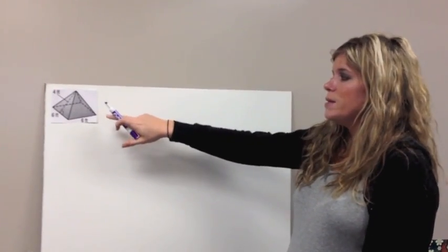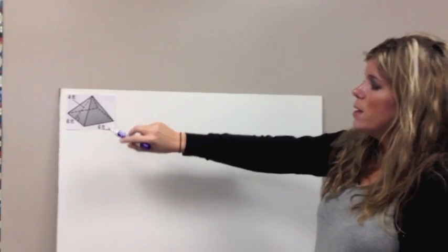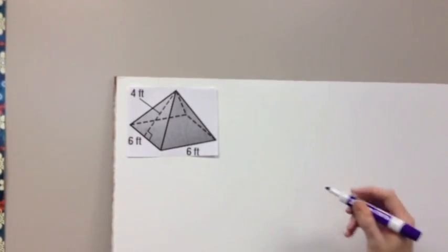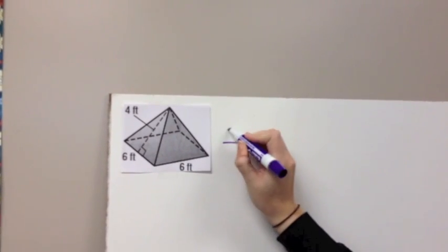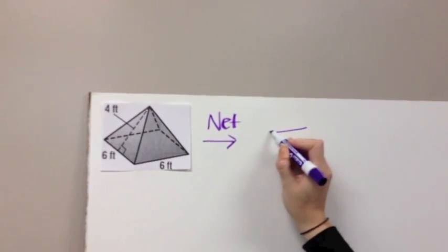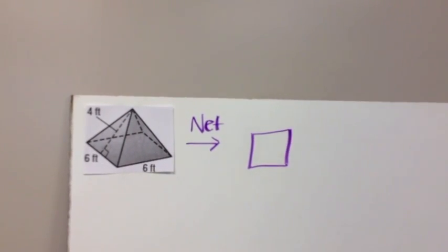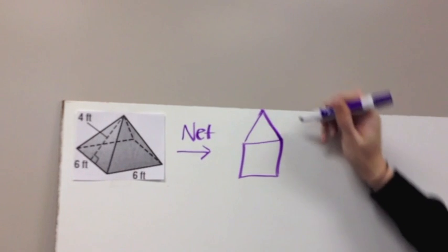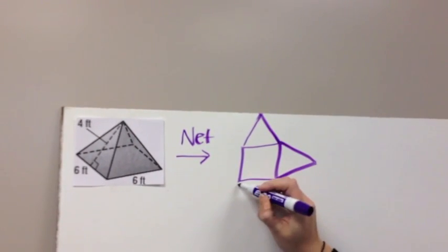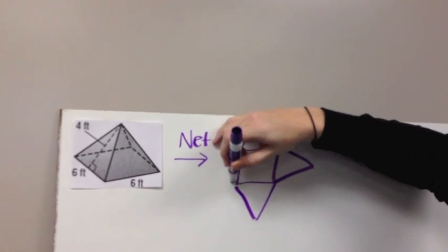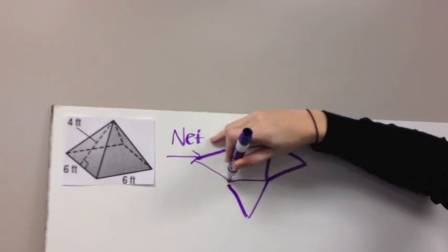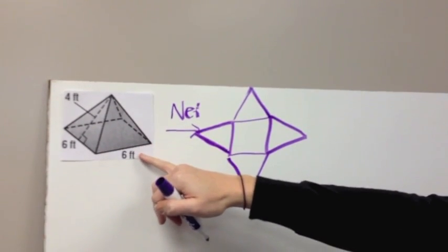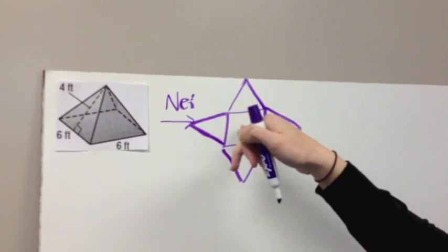Our first figure is going to be a square pyramid, and you'll notice that it's got 5 different sides here. We've got a base that's a square, so I'm going to go ahead and draw you a net of this figure. Our base is your basic square, and then we have 4 triangles on each side of that square, so if we were to open it up,